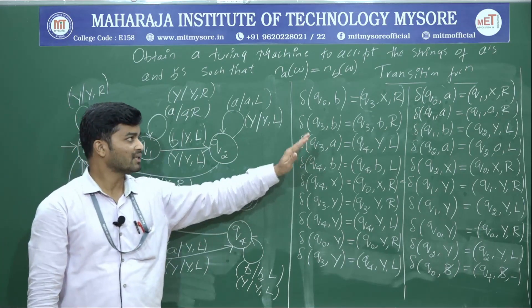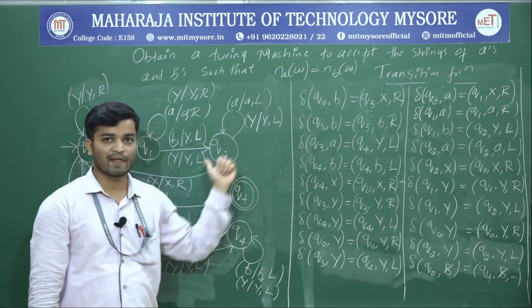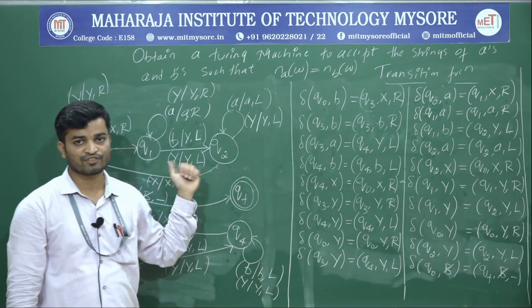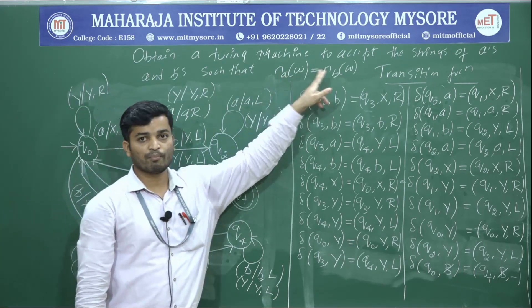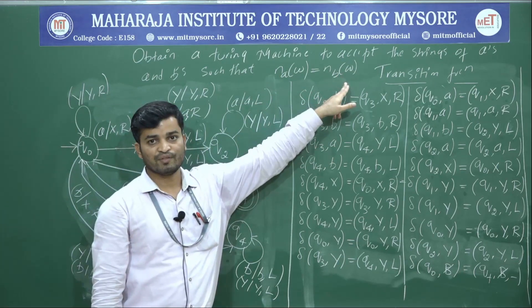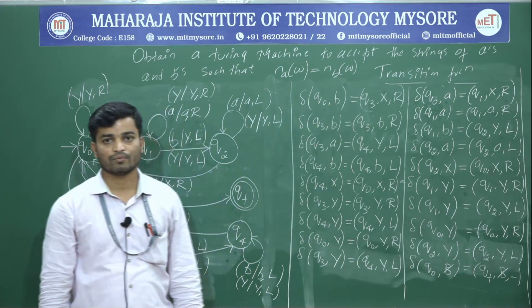This is the complete transition function and transition diagram for strings with an equal number of A's and B's. Thank you.